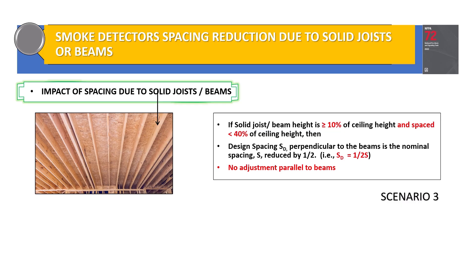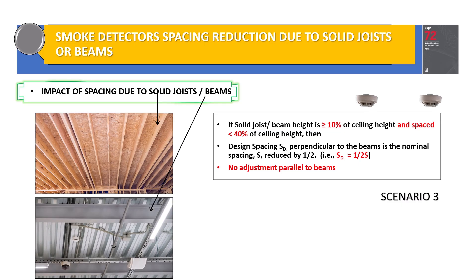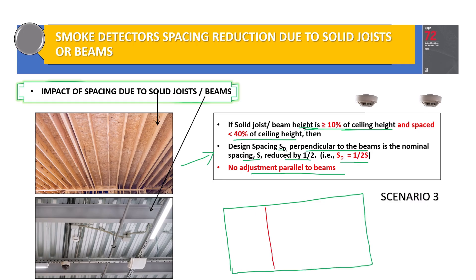In Scenario 3, if you have solid joists or beams and the depth of the beam or solid joist is greater than or equal to 10 percent of the ceiling height, and the beams or joists are spaced less than 40 percent of the ceiling height, then the design spacing perpendicular to the beam is the nominal spacing reduced by half — SD equals half S — with no adjustment parallel to the beams.